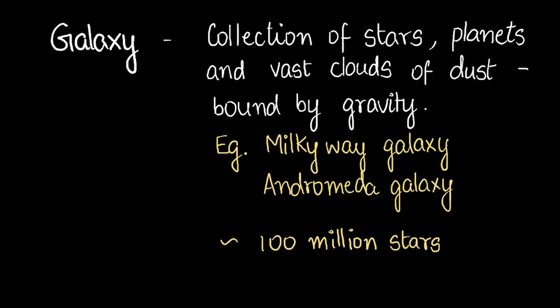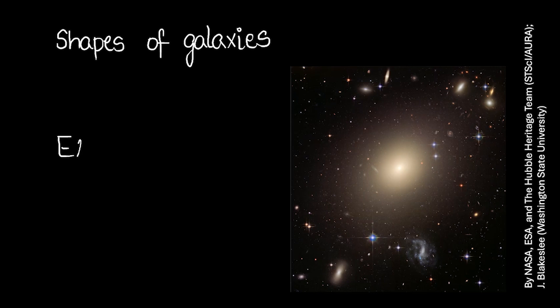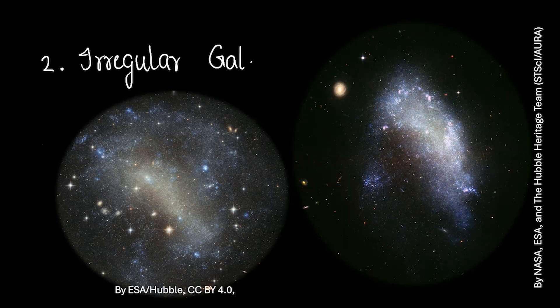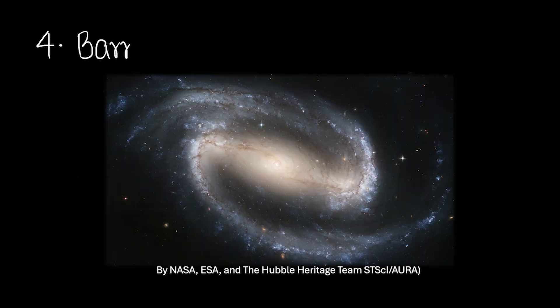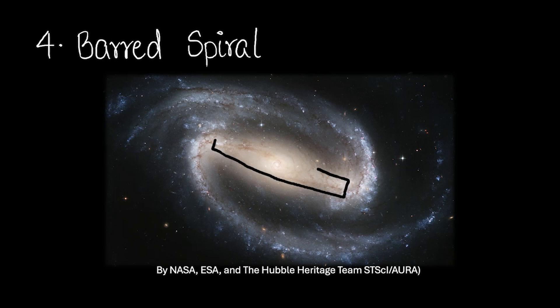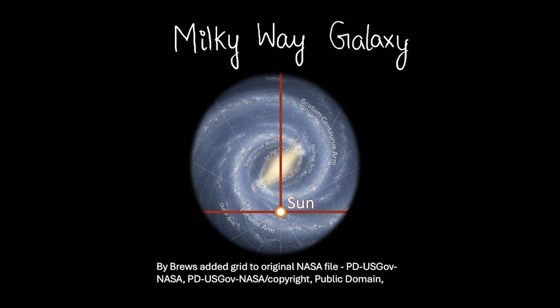Let me show you a few shapes of galaxies. Galaxies could be ellipsoidal in shape, like an egg. Galaxies could be weirdly shaped — those are called irregular galaxies. Galaxies could be spiral galaxies. Or they could have a bar at the center, making them barred spiral galaxies. The galaxy in which we live, the Milky Way galaxy, is also a barred spiral galaxy.